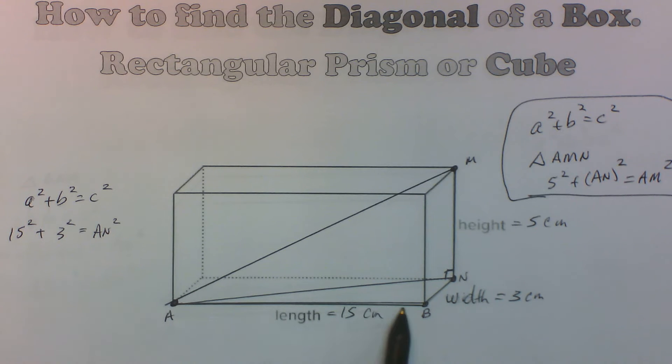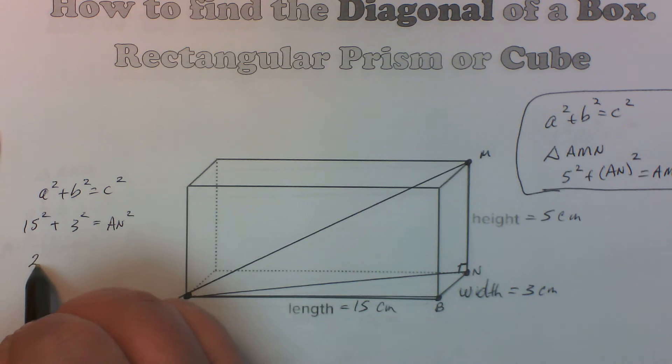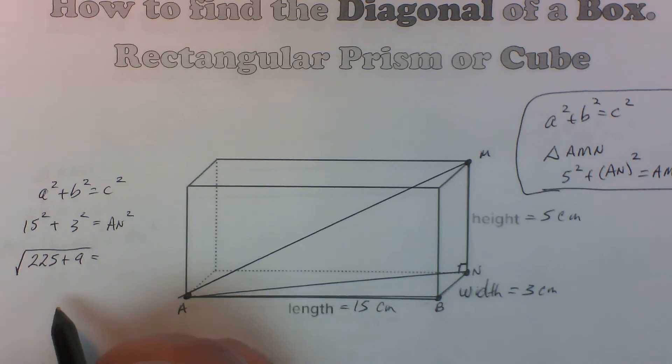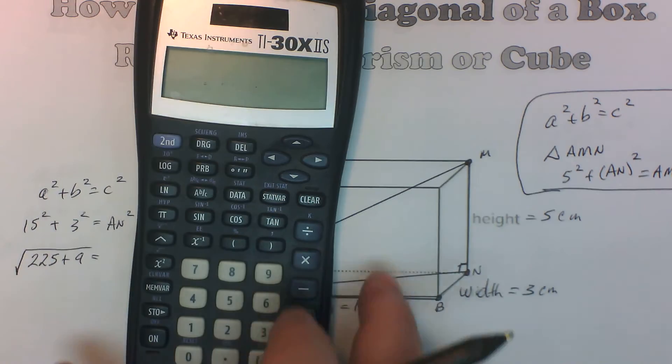So this side plus this side, right? Take the squares. So 225 plus 9, and we're going to take the square root of that. So we're going to use our calculator right here.